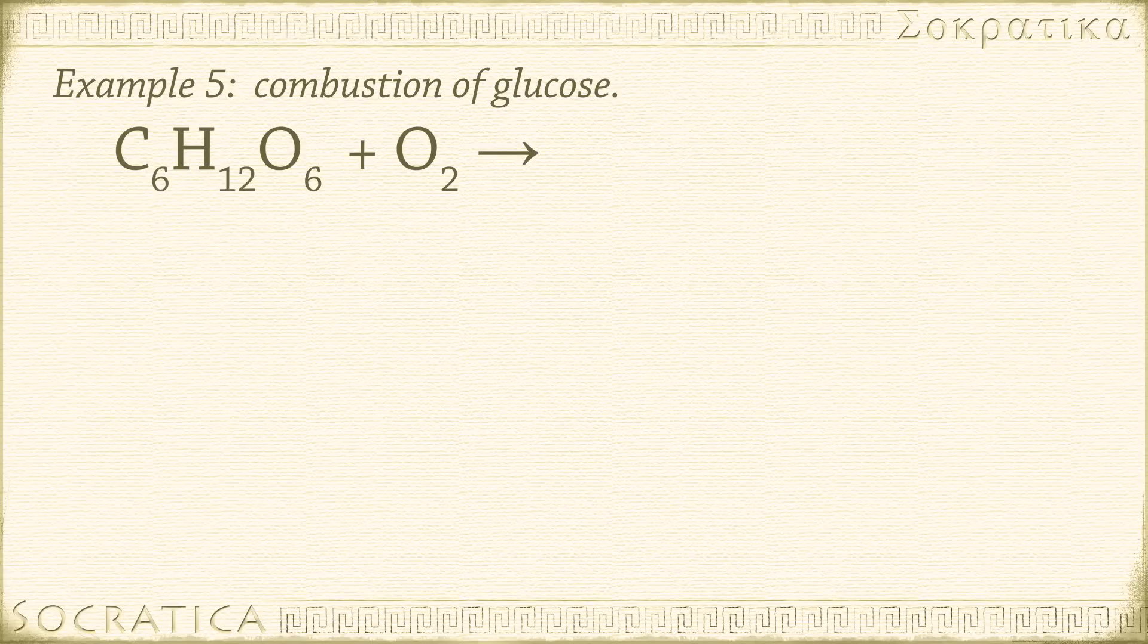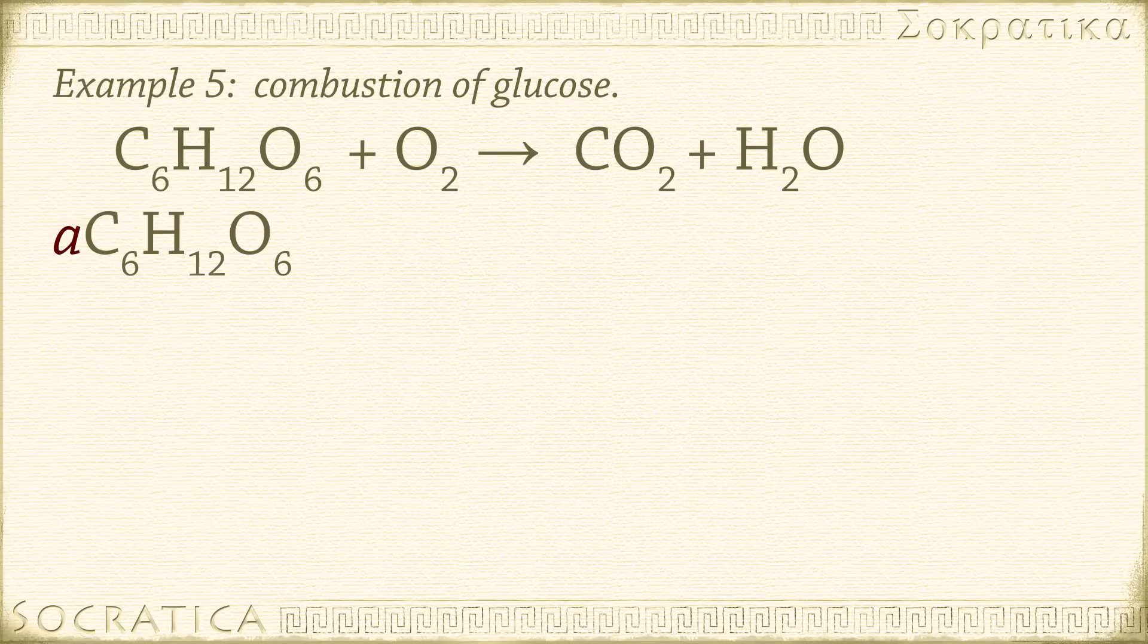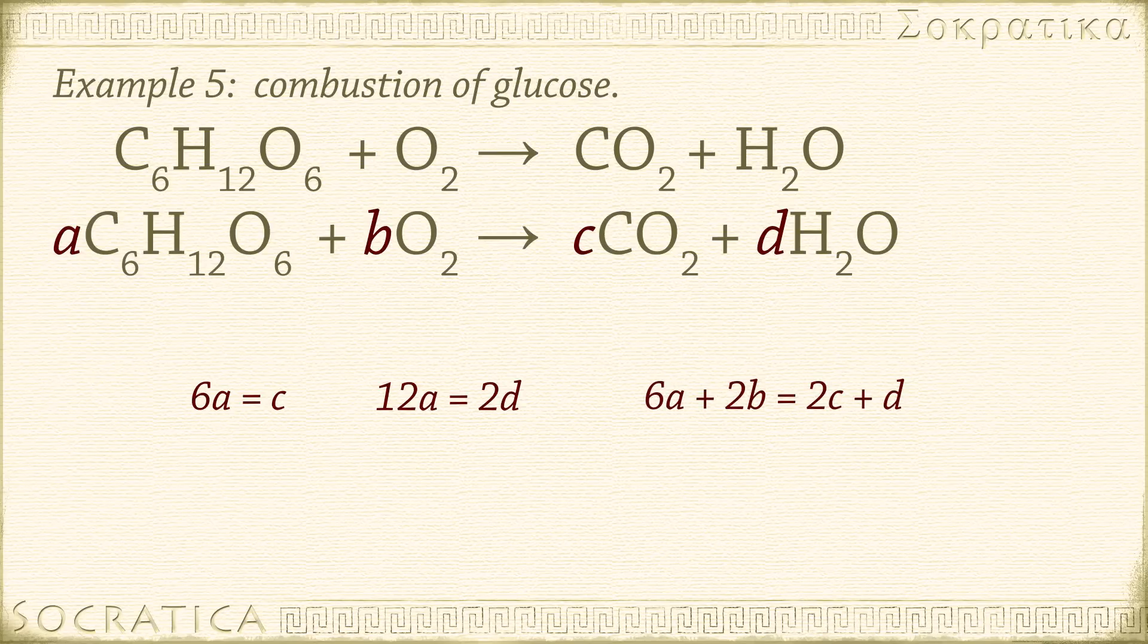Our last example is a combustion reaction, the combustion of glucose. C6H12O6 plus O2 yields CO2 plus H2O. We have 4 variables, so let's use A, B, C, and D. A C6H12O6 plus B O2 yields C CO2 plus D H2O. The number of carbon atoms must balance, so 6A equals C. The number of hydrogen atoms must balance, so 12A equals 2D. The number of oxygen atoms must balance, so 6A plus 2B equals 2C plus D. That part was a little complicated, just be methodical.